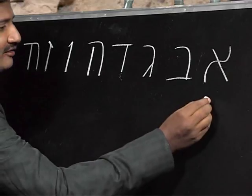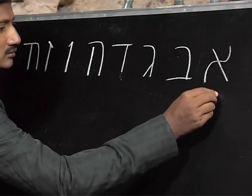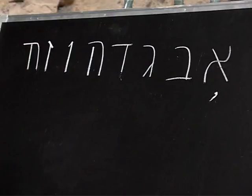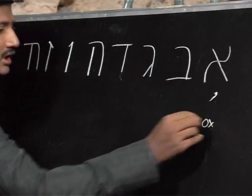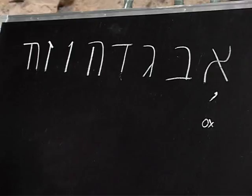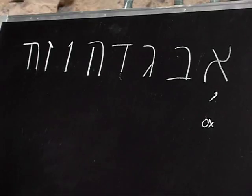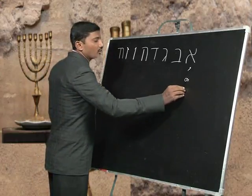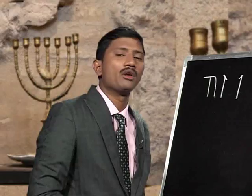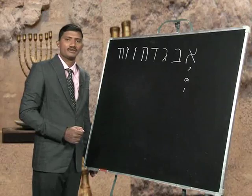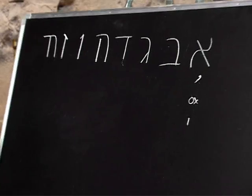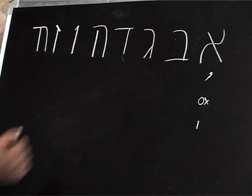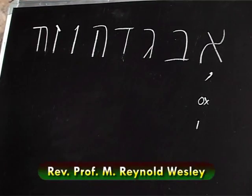So what is Aleph? It is a silent letter with no sound. We have seen it is a picture of an ox, and the meaning talks about strength. Its numerical value is number 1, referring to God the Almighty — and from this letter we get the name of God, which is Elohim.